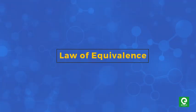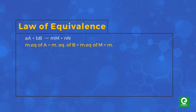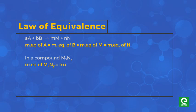The Law of Equivalence states that one equivalent of an element combines with one equivalent of another element. In a chemical reaction, equivalents of reactants react in equal numbers to give the same number of equivalents of products.